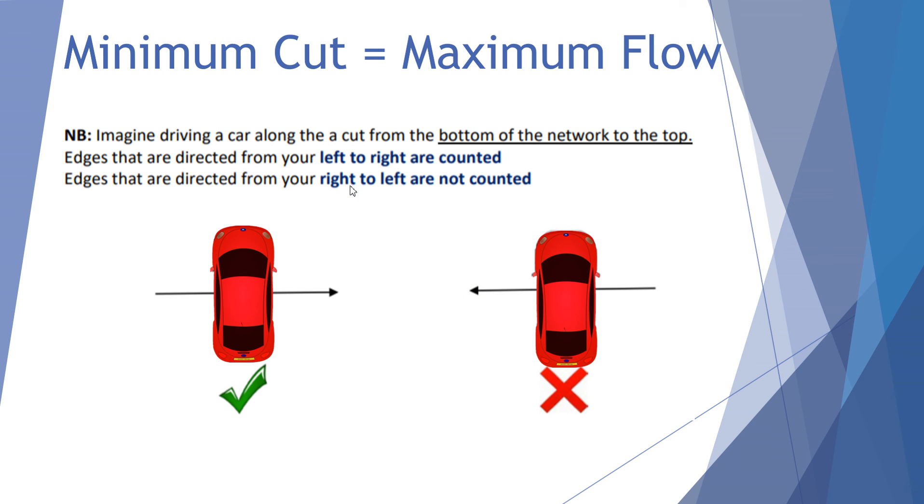Now, the way in which I like to try and examine whether a cut contributes or doesn't contribute to the flow capacity is considering running along the dotted path from the bottom of the network to the top as though you were in a car. Now, if you drive over the side of a line, an edge, and that line goes from your passenger's side through to your driver's side, or left to right, then you count that capacity.